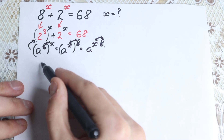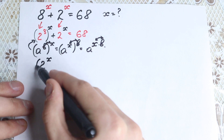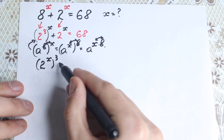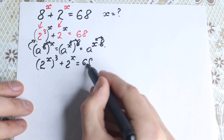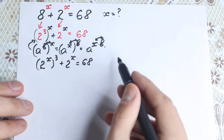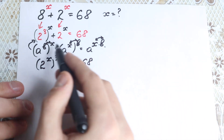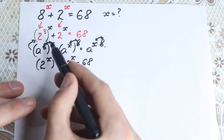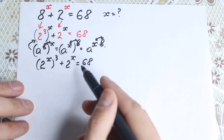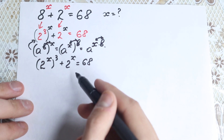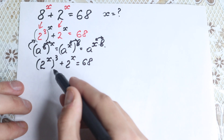Applying this rule: 2 cubed to the power x can be written as 2 to the power x, to the power 3, plus 2 to the x, equals 68. Two really important steps: first, 8 written as 2 cubed; second, applying the power interchange rule. I hope you understand — this equation now looks like a cubic equation.